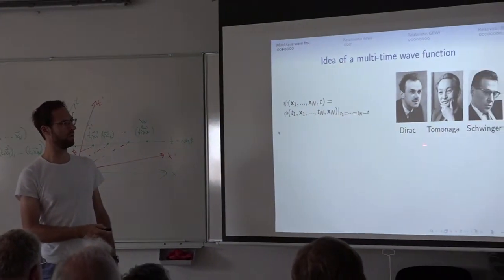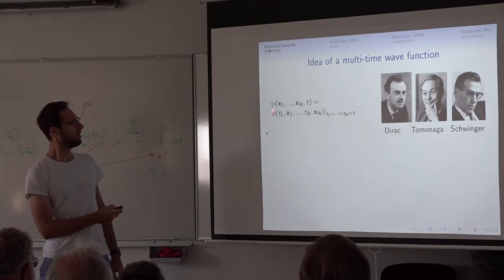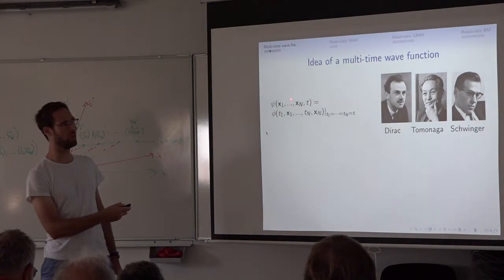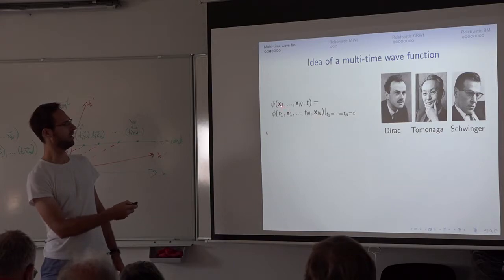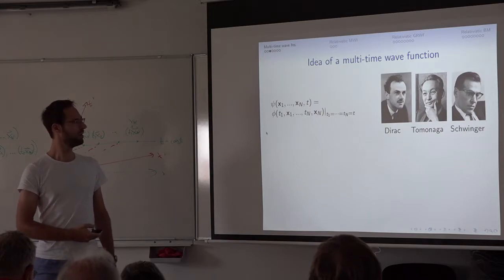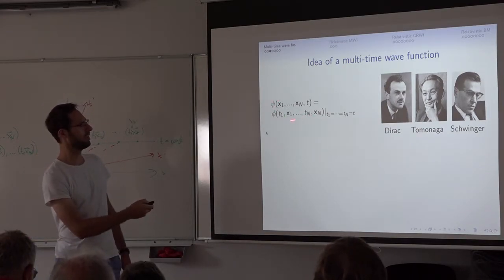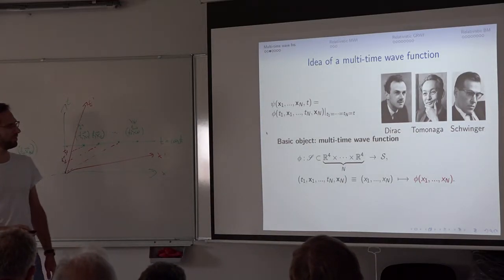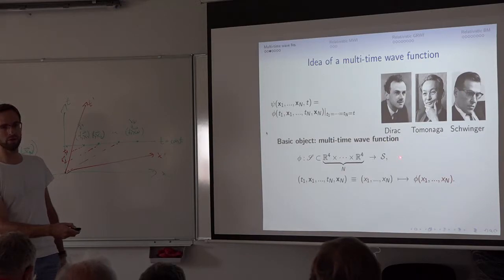The wave function ψ we're used to in non-relativistic quantum mechanics is just a special case of a more general object: the multi-time wave function. It lives on spacetime configurations, and which special case is it? Just those where all the time coordinates are equal to each other in a certain frame — so this is a frame-dependent object. To summarize, the basic object is a multi-time wave function; it lives on a certain subset of spacetime configuration space, takes a configuration spacetime vector, and maps it to some spin-space vector.